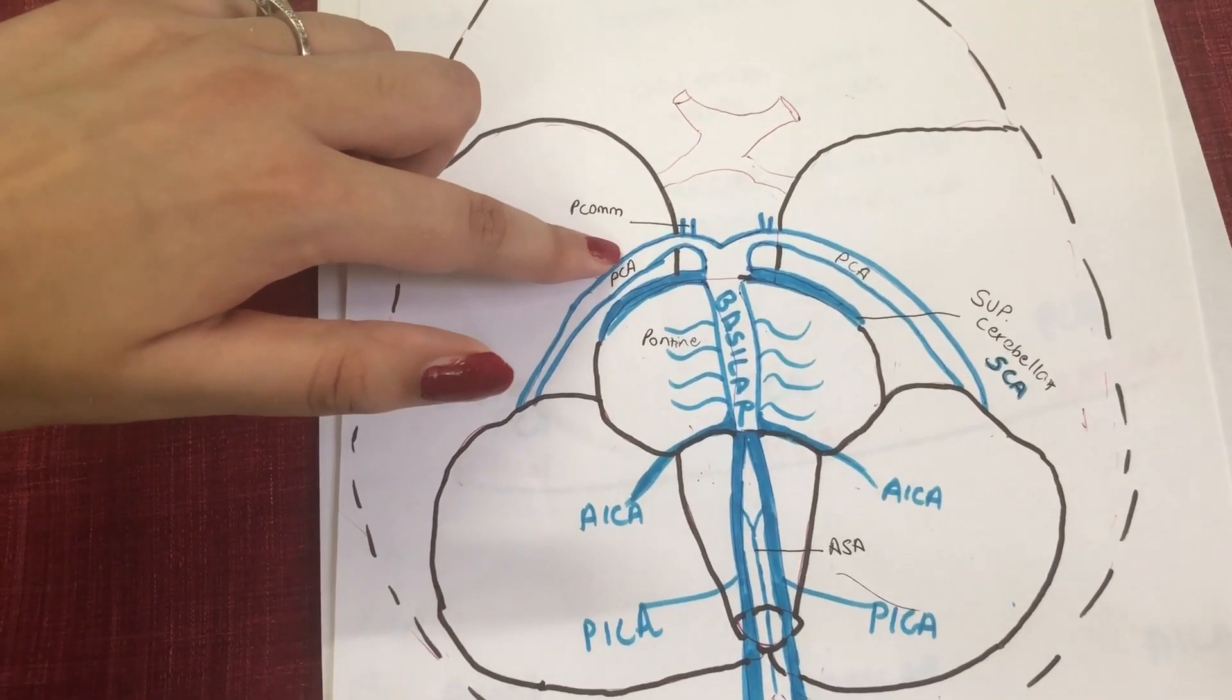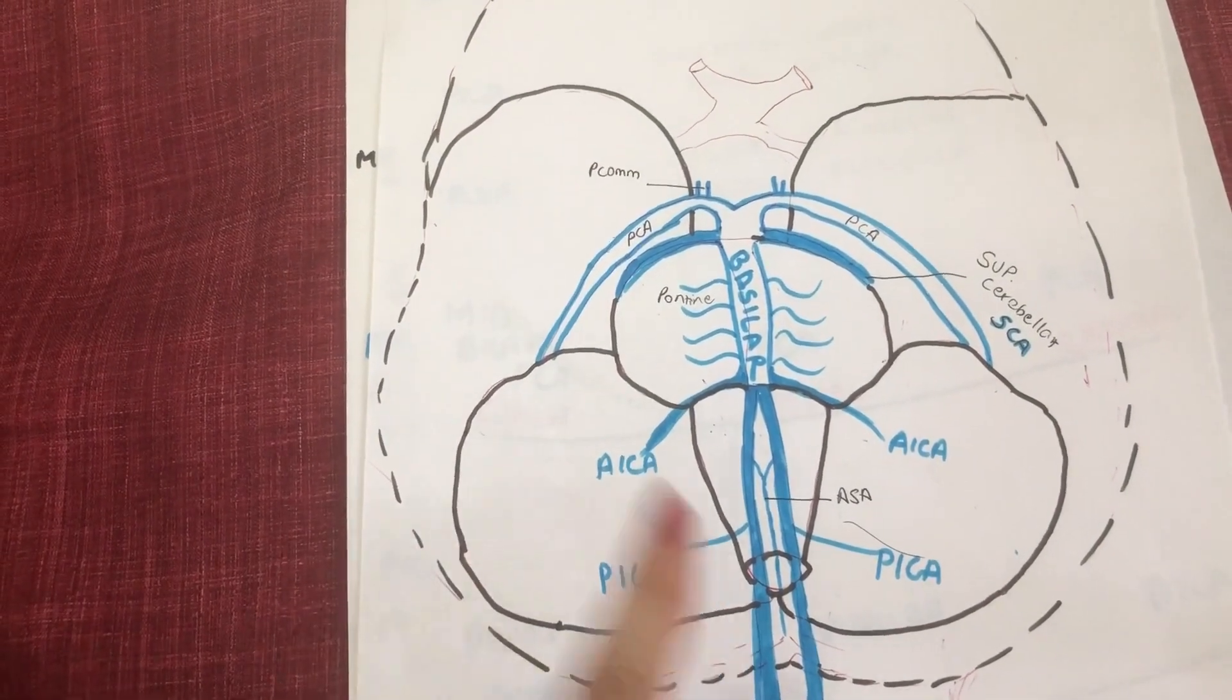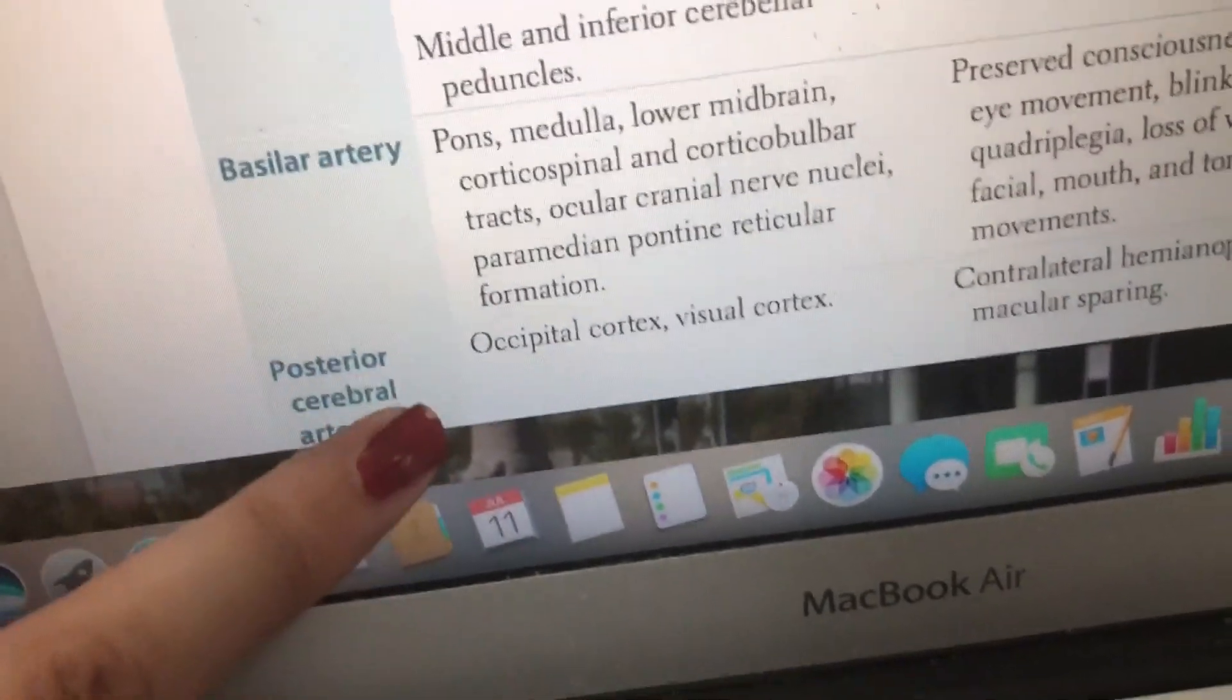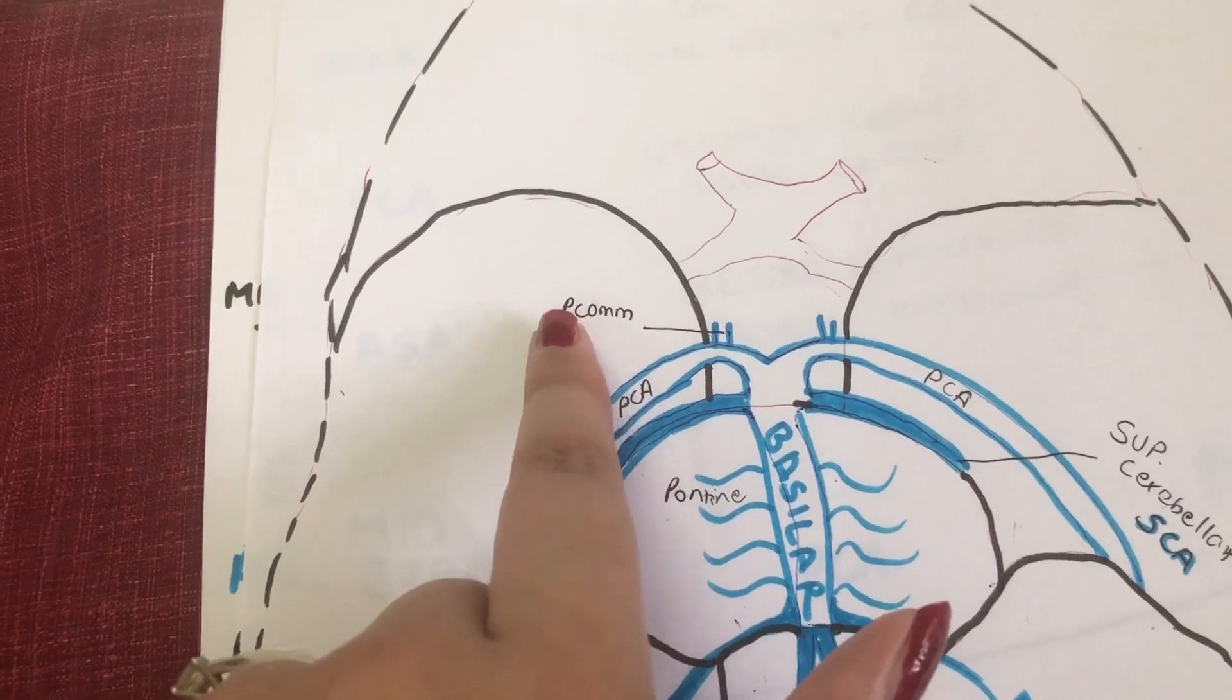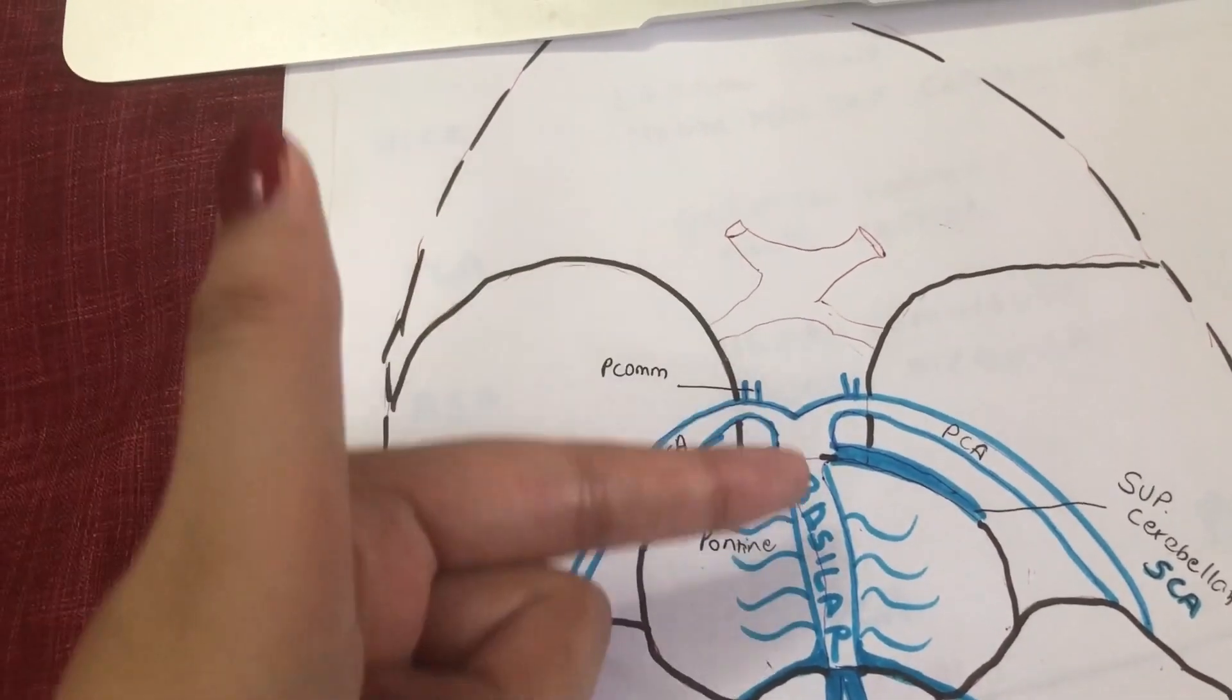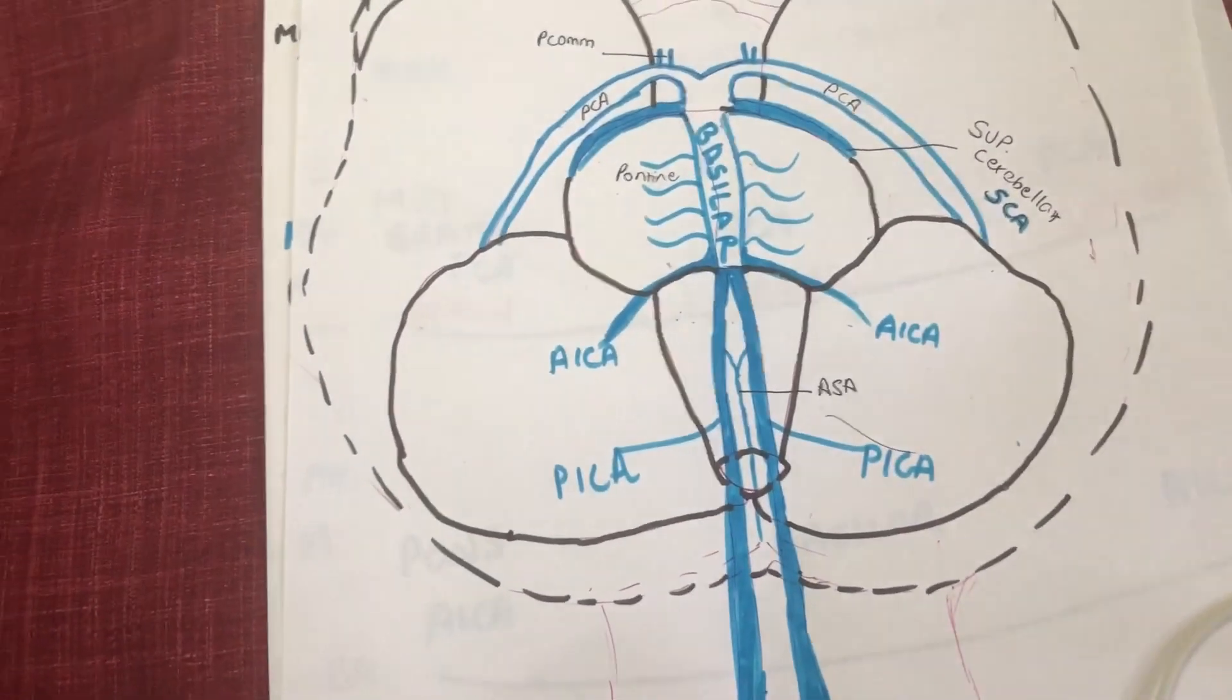This is known as the posterior cerebral artery, and as the name implies, cerebral, this supplies the occipital lobe of the cerebral cortex. A lesion in the PCA will then obviously lead to defect in the occipital cortex and the visual cortex. You can see these tiny two little p-coms coming out of the PCA, and these p-coms are known as the posterior communicating arteries.